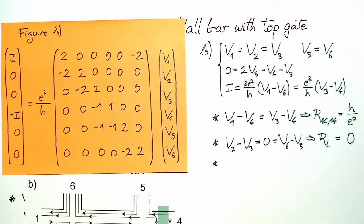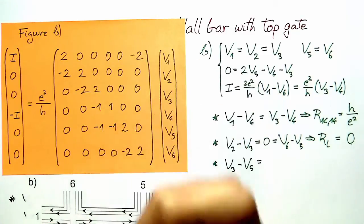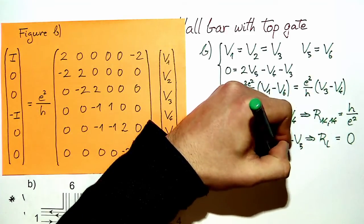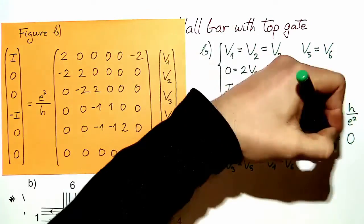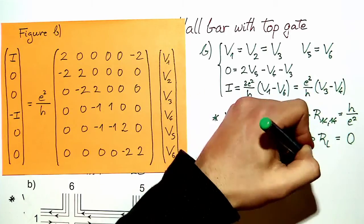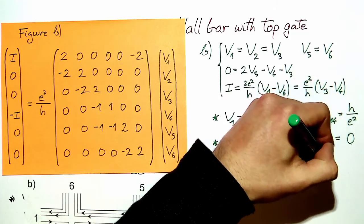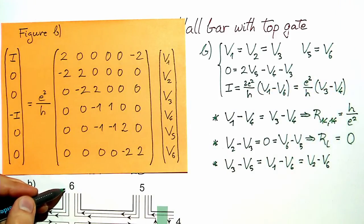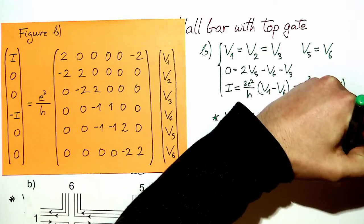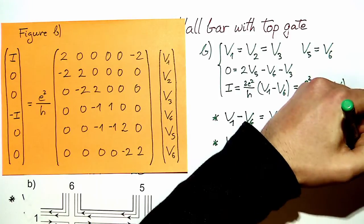For the Hall resistance, we consider V3 minus V5, which equals V1 minus V6, allowing us to use this equation. It is also equal to V2 minus V6 since V1, V2, and V3 are equal — which is the other Hall resistance. So again the two are equal, and we see a Hall resistance of h over 2e².